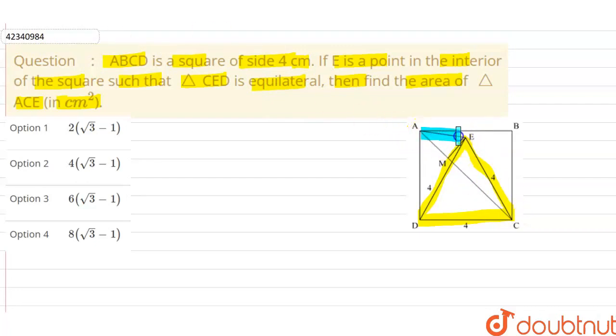If we write this triangle, this is basically ACE. This area is triangle ACE area. So how do we do this question? Because we can see that the square side is 4 cm. So all 4 sides are equal.